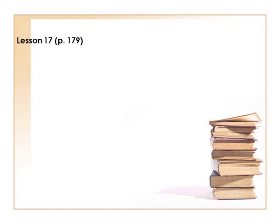So here we are at page 179, and we are talking about voice, and we see this boy throwing the ball. So what have we learned so far about verbs? This goes all the way back to Lesson 9, when we started talking about different verbs. There are four conjugations, and they have different characteristics. We've been focusing on three of the main characteristics. They have person — meaning first, second, and third: I throw the ball, you throw the ball, he/she/it throws the ball. They have number: I throw the ball, we throw the ball. They also have tense, meaning time: I am throwing the ball, I was throwing the ball, I will throw the ball.